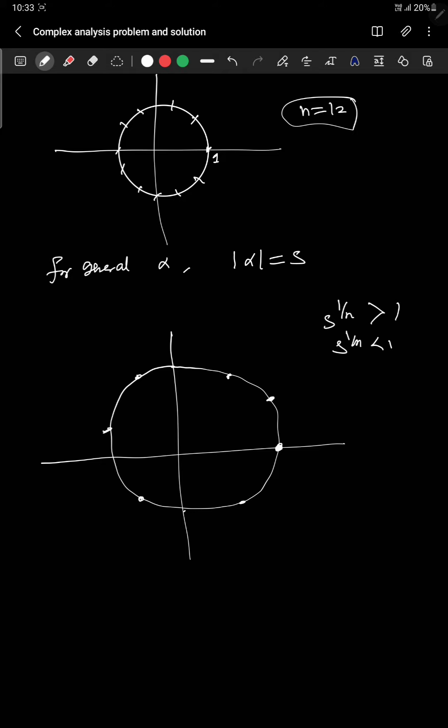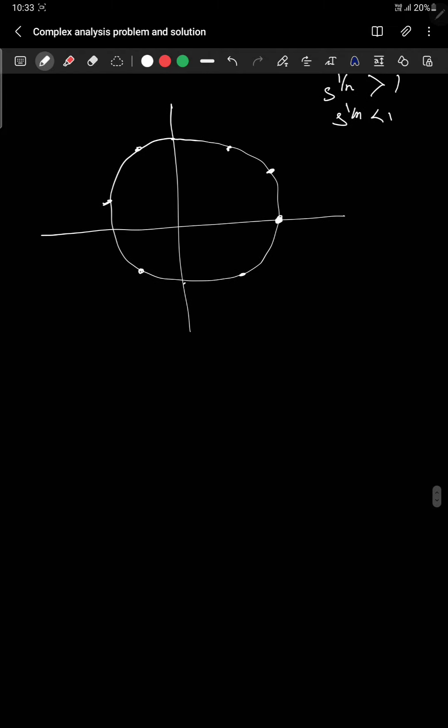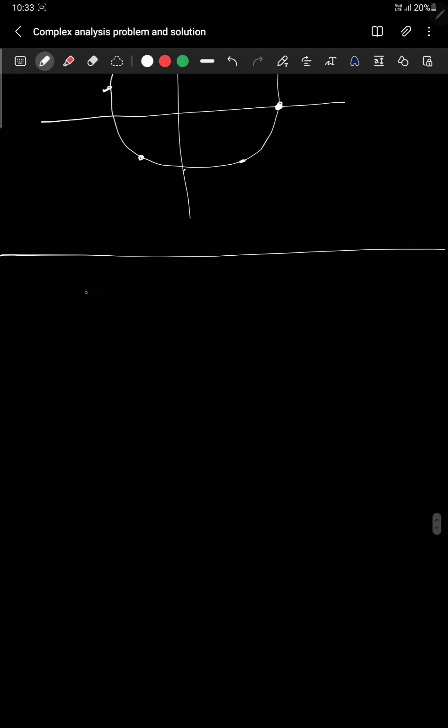So fine, right? This is what I wanted to say. And it has a lot of great insights. I will tell you one thing about that also. That one is the map z going to z^n between the S1, the circle to circle. This map is onto map.